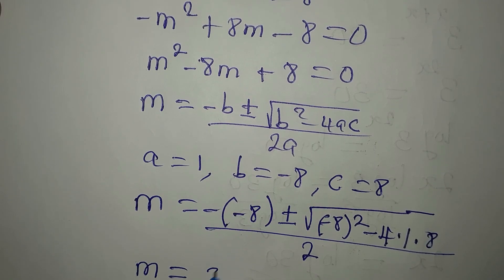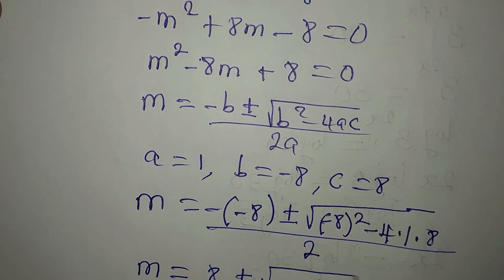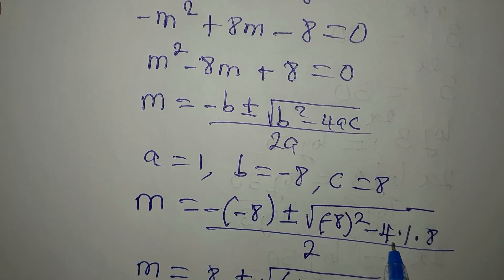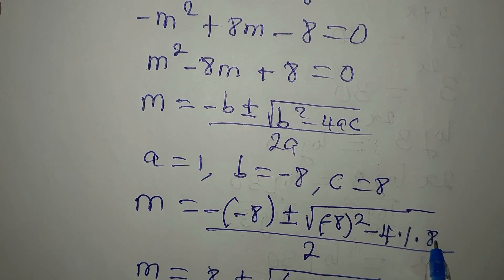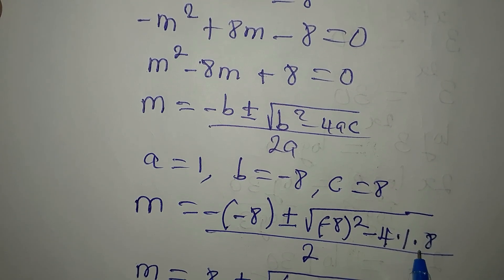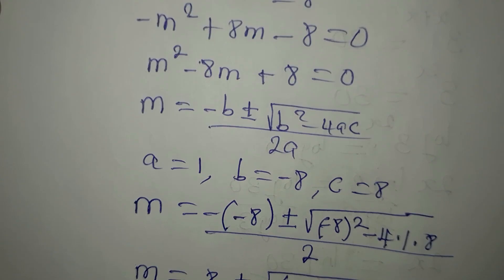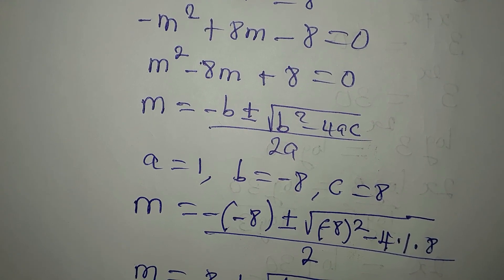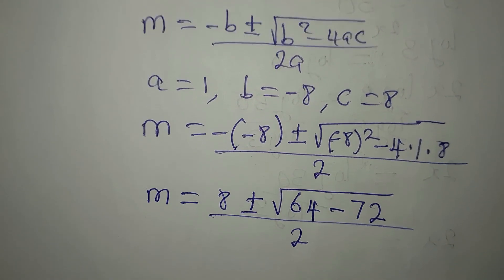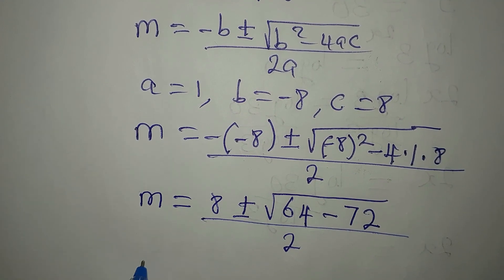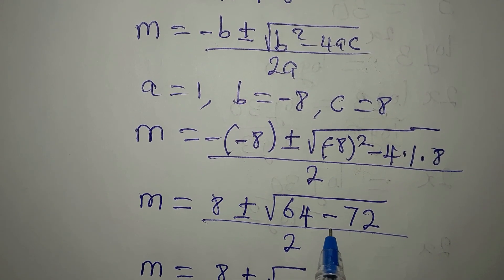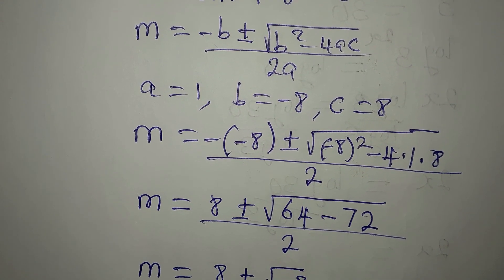So m equals 8 plus or minus square root of 64 minus 32, all over 2. Wait — 4 times 8 is 32, but 4 times 1 is 4, giving 4 times 8 equals 32. Actually 64 minus 32 gives 32... let me correct: 64 minus 4 times 1 times 8 is 64 minus 32. Reworking: we get 8 plus or minus square root of 64 minus 72, which is minus 8, divided by 2.